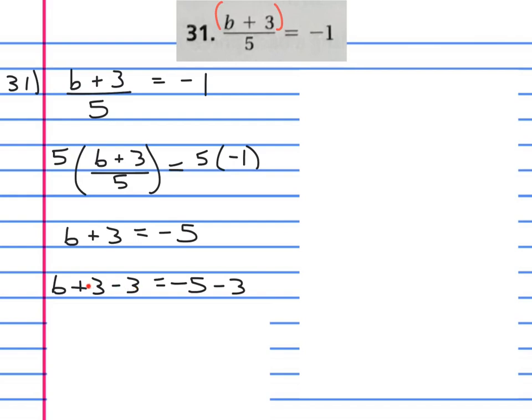Now we're simplifying. The whole point of putting minus three on both sides was to cancel out, so we should be left with just b. When we do this side, negative five minus another three, we're already down five, we go down another three, down a total of eight: negative eight.